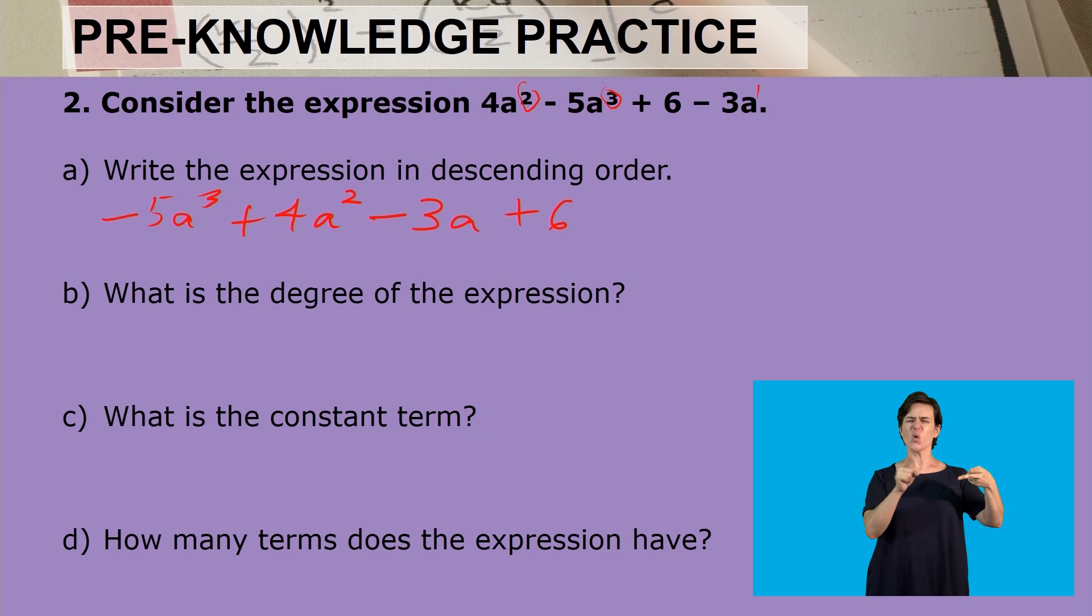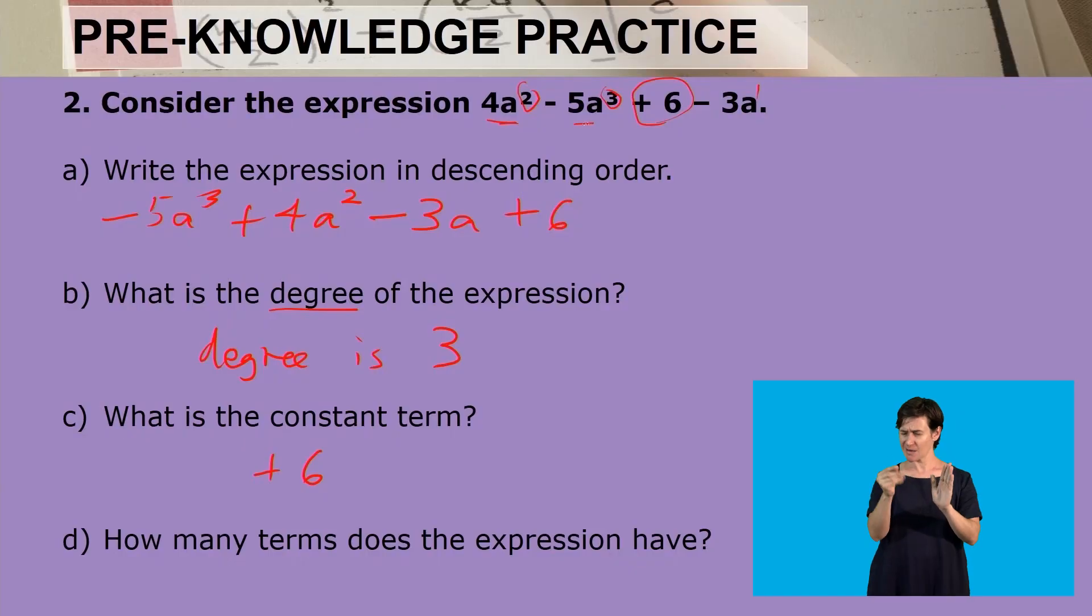That is writing it in descending order. The next question is: what is the degree of the expression? Remember the degree is the highest exponent and that exponent is a cubed, so the degree is 3. Next question is what is the constant term? The constant term is positive 6. How many terms does the expression have? Remember we count terms as separated by plus or minus sign, so it has four terms. That expression has four terms and it's known as a polynomial.